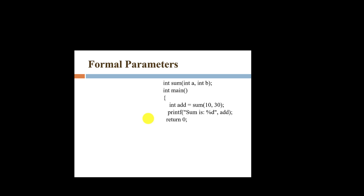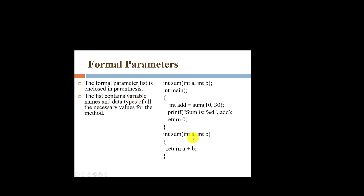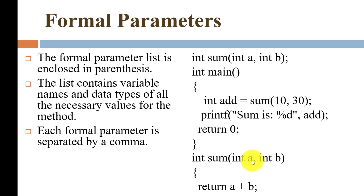Let's consider this example for formal parameters. Here we are performing the addition of two numbers, and this is the definition of the function. The formal parameter is the list enclosed in parentheses. The function name is 'sum', and inside the round brackets I accept two variables — int a and int b. These are the variables with their data type int.